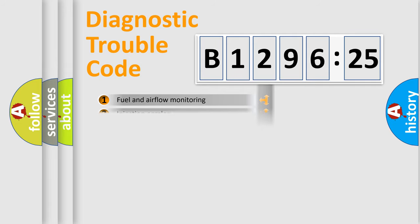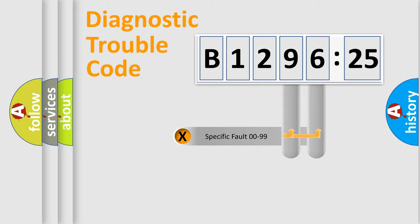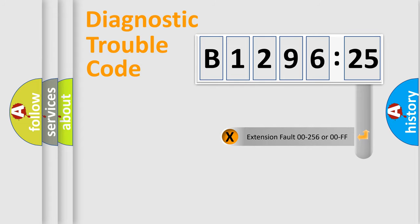The third character specifies a subset of errors. The distribution shown is valid only for the standardized DTC code. Only the last two characters define the specific fault of the group.